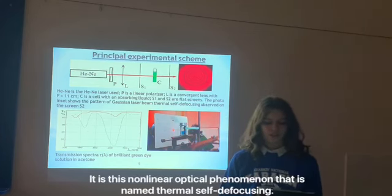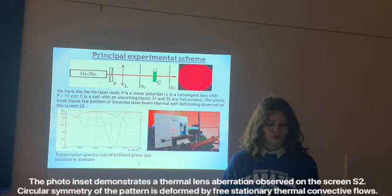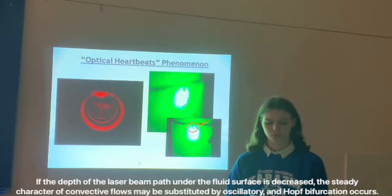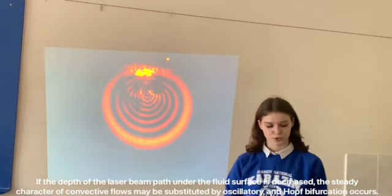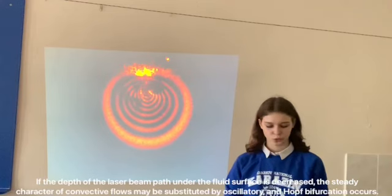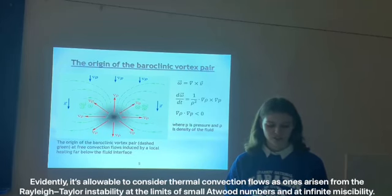It is this non-linear optical phenomenon that is named thermal self-defocusing. The photograph demonstrates a thermal lens aberration observed on the screen. Circular symmetry of the pattern is formed by three stationary thermal convective flows. If the depth of the laser beam passed under the fluid surface is decreased, the static character of convective flows may be substituted by oscillatory and defocusing occurs. Additionally, it is allowable to consider thermal convection flows as onset, the rising flows relate to Rayleigh instability at the limits of small Rayleigh number at the infinity instability.